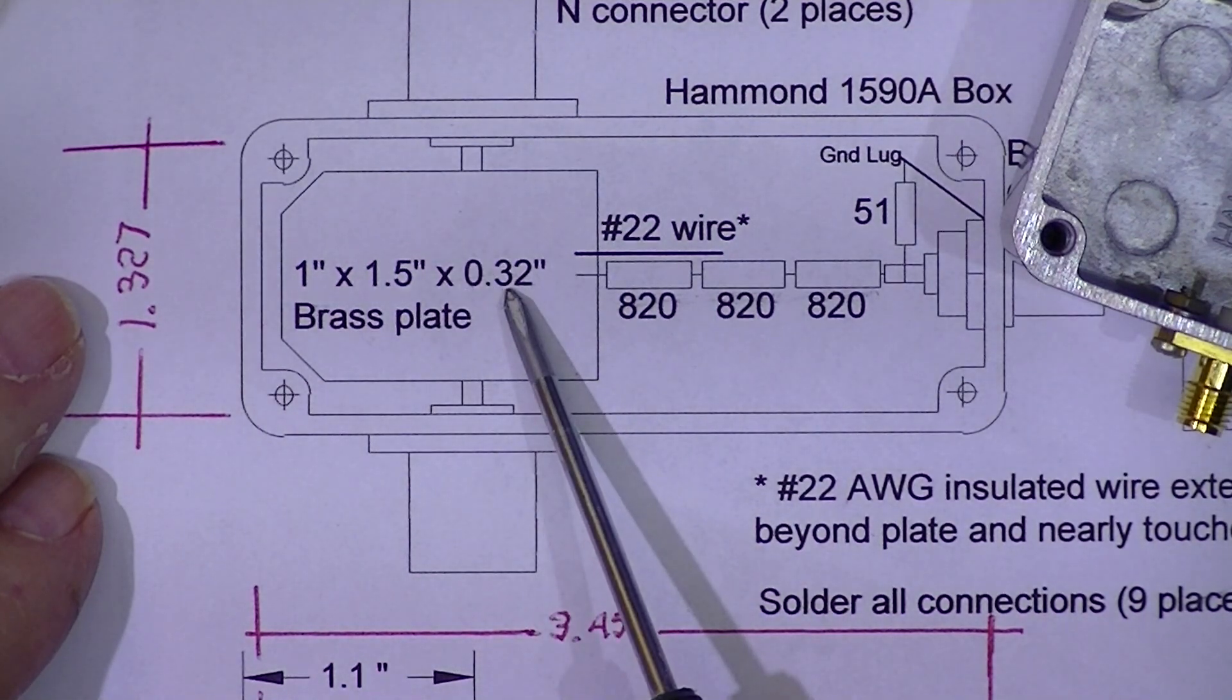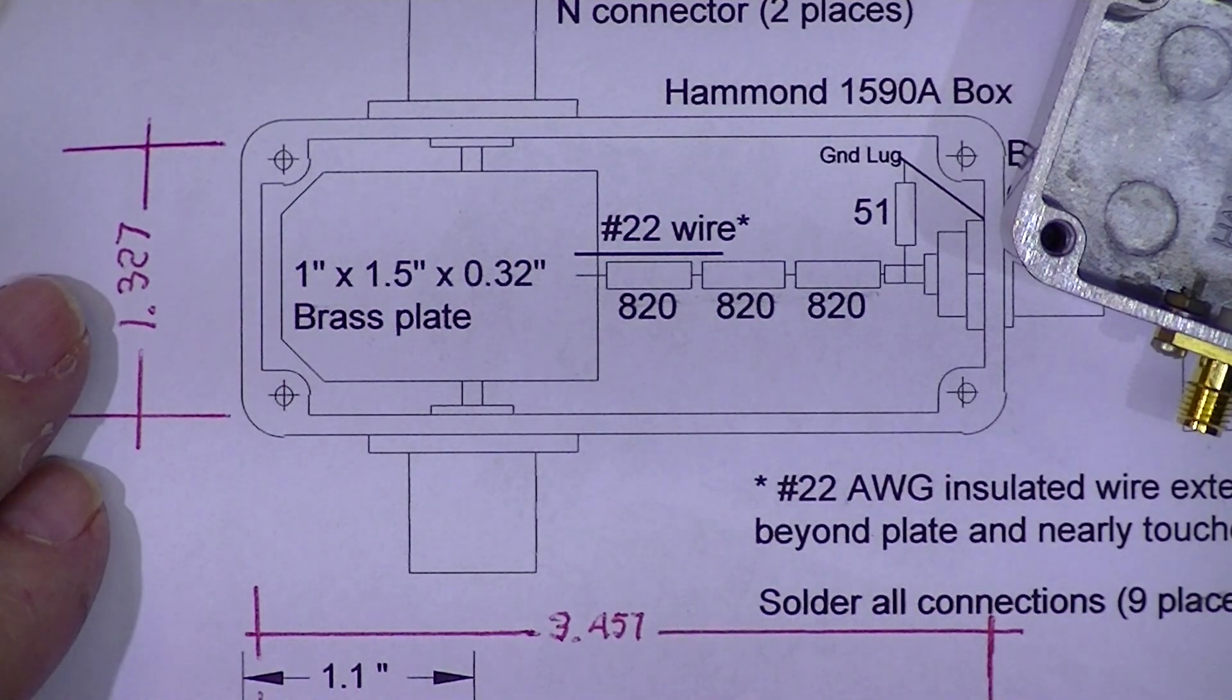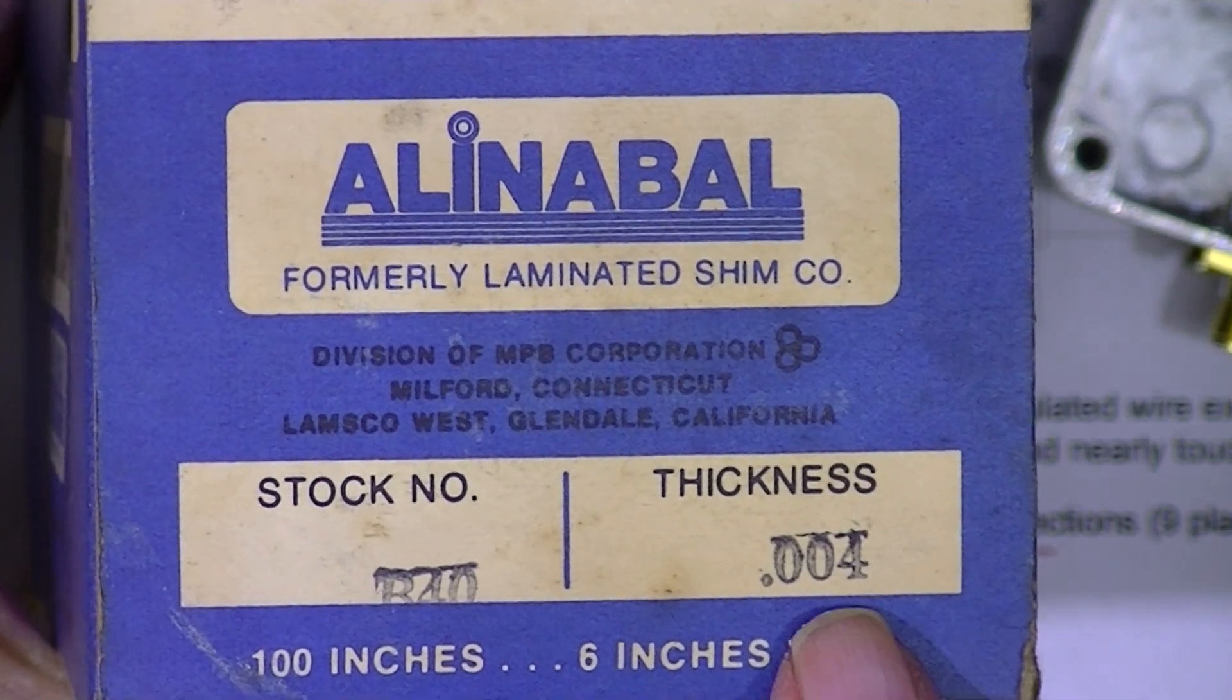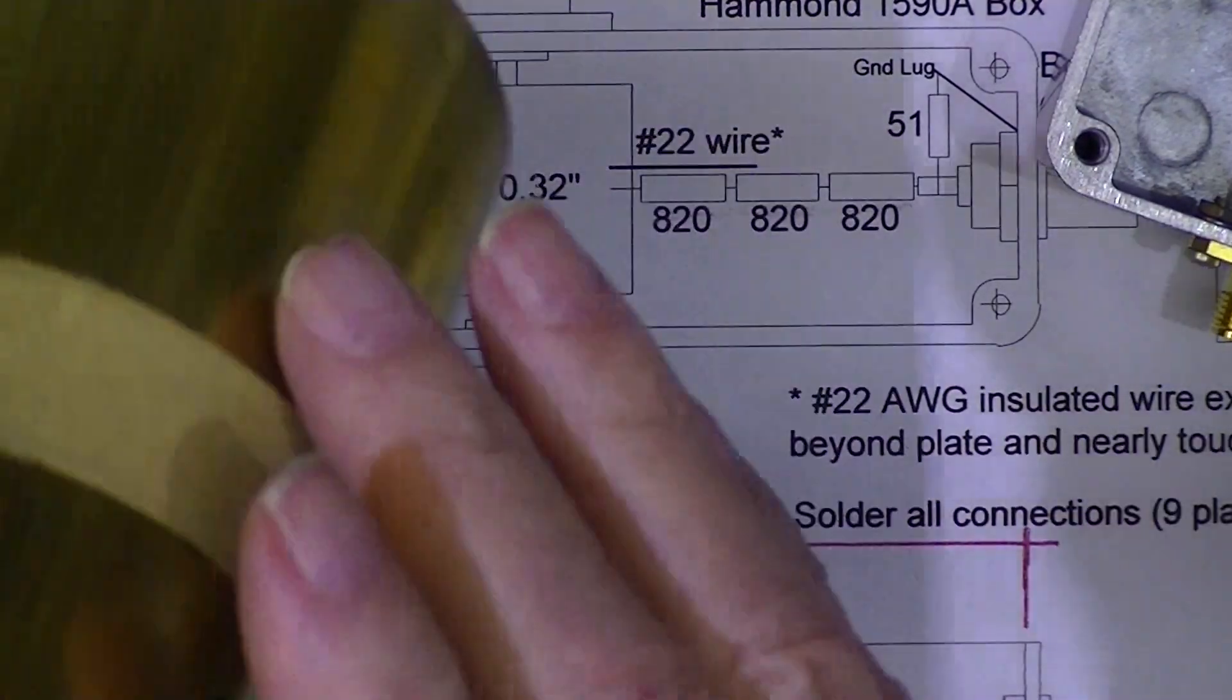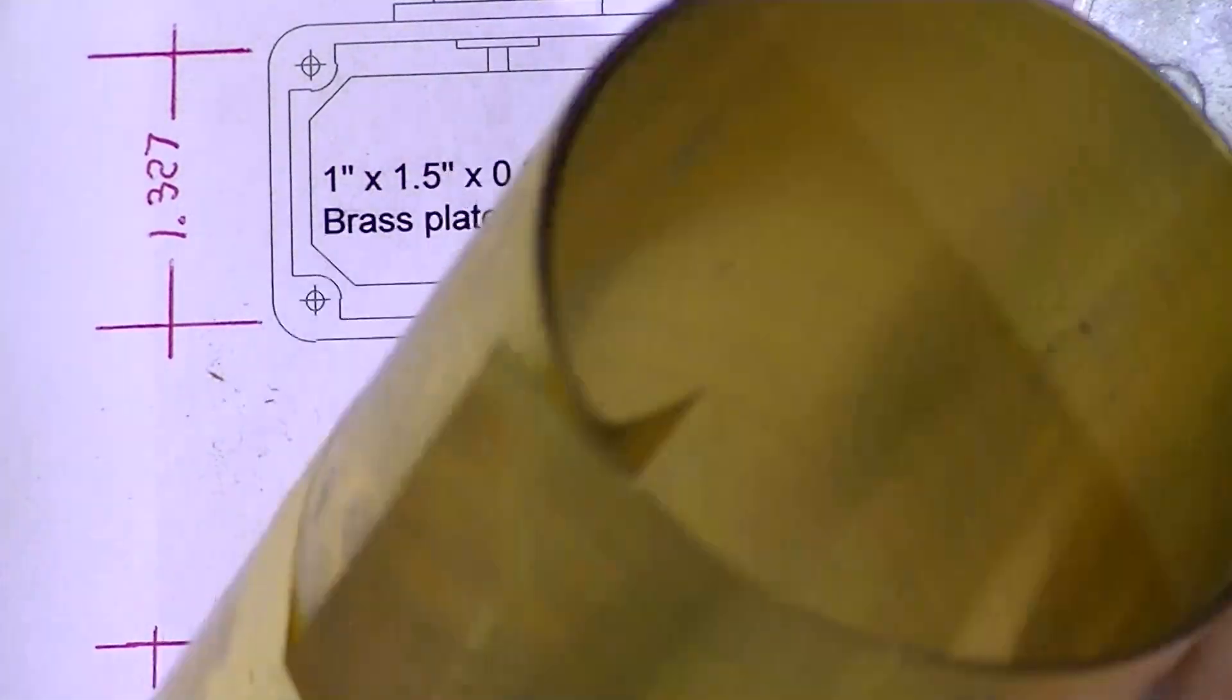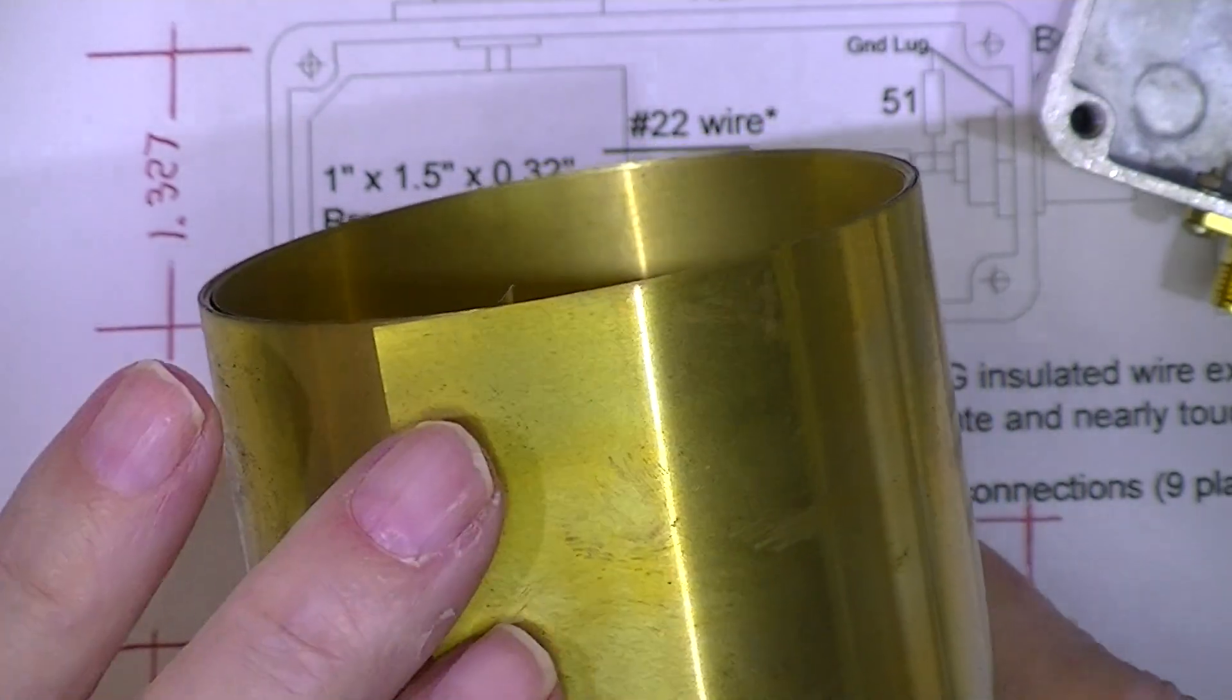I don't think the thickness is very important. I think single-sided circuit board would work. Brass or copper would be nice because we're soldering to it. What I had hoped to use was this brass shim stock, but it's four thousandths of an inch thick. Now it's pretty stiff, but four thousandths of an inch is only a little thicker than human hair.